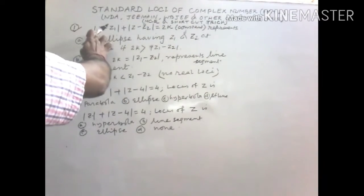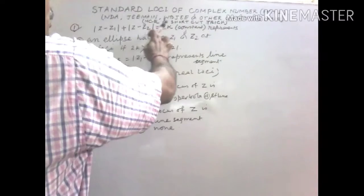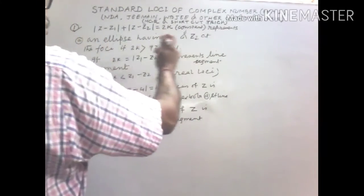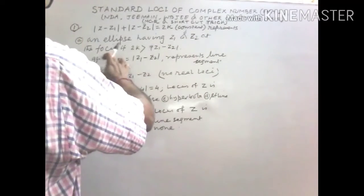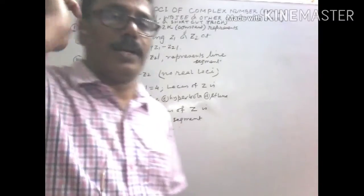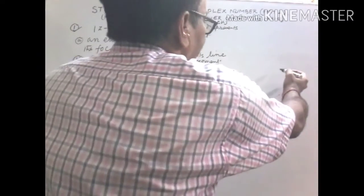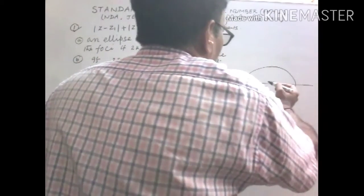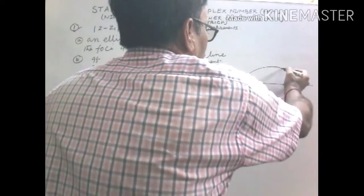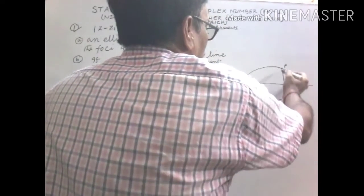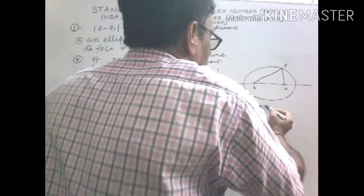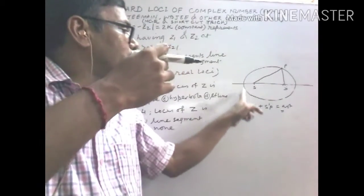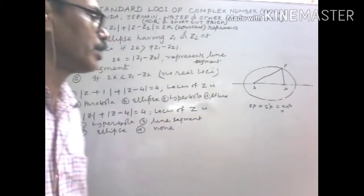Result number one: mod Z minus Z1 plus mod Z minus Z2 equals 2k, where k is a constant, represents an ellipse having Z1 and Z2 at the foci, if 2k is greater than mod Z1 minus Z2. To recall this from coordinate geometry: if P moves such that SP plus S'P equals a constant, then the locus of P is an ellipse.